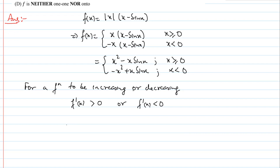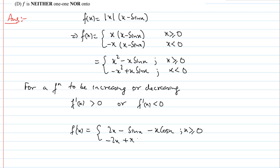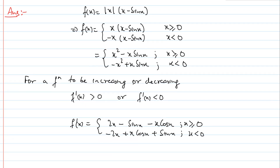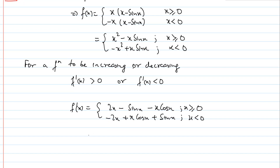तो हम लोग derivative check कर लेते हैं। f'(x) = 2x − sin(x) − x·cos(x) for x ≥ 0, and f'(x) = −2x + x·cos(x) + sin(x) for x < 0।